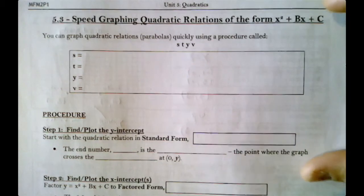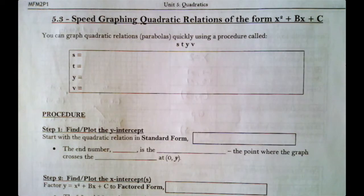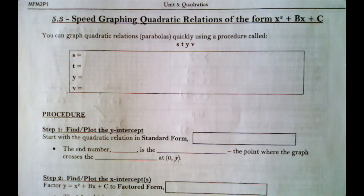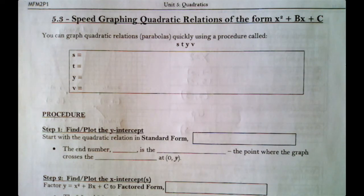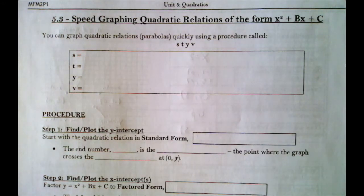This is lesson 5.3 and in this lesson we're going to speed graph a quadratic relation. Speed graphing is actually going to be the next two lessons — we're going to do it once in 5.3 and again in 5.4. The reason we're doing it twice is because it takes everything we've learned so far this unit — all the features of our parabola — plus factoring from our last unit, and brings it all together so we can graph a parabola without making a table.